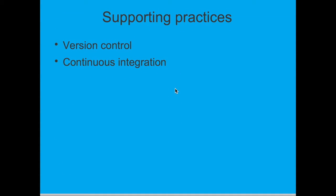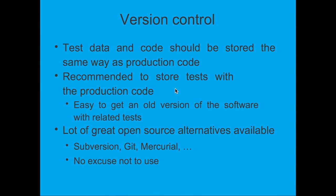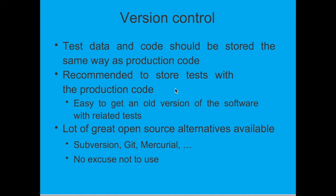There are certain supporting practices which should also be taken care of, like version control and continuous integration. In version control, test data and code should be stored the same way as production code, with different versions maintained. It is recommended to store tests with the production code, making it easy to get older versions of software with related tests and data. Large open source alternatives are available such as Subversion and Git, and I recommend using either of them.